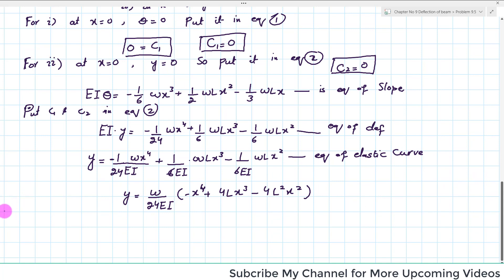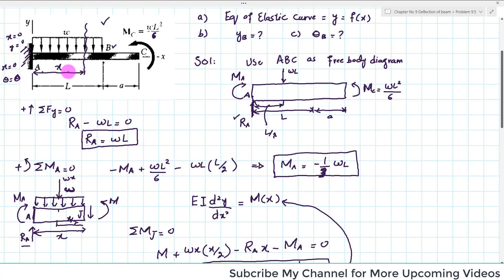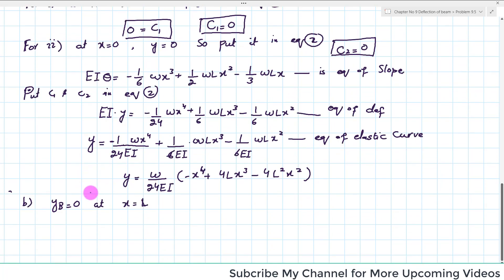Now moving to part B: we need to find the deflection at point B. Since x was measured from A, at point B we have x = L. Substituting x = L into the elastic curve equation and simplifying, yB = WL⁴/24EI. This is the deflection at point B.